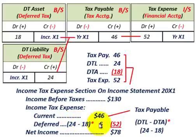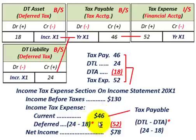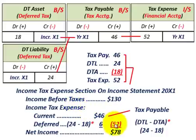The deferred portion of income tax expense is calculated as: Deferred Tax Liability of $24,000 minus Deferred Tax Asset of $18,000 = $6,000. Since the deferred tax liability exceeds the deferred tax asset, this is an increase to income tax expense. If the deferred tax asset were greater, it would reduce income tax expense. Total income tax expense = $46,000 (current) + $6,000 (deferred) = $52,000.